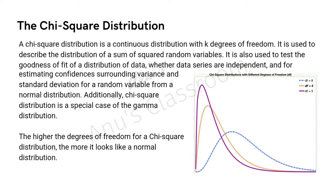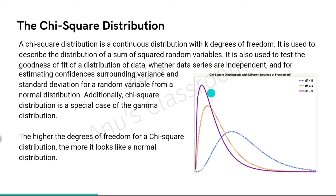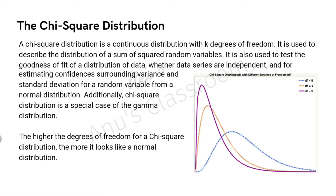The chi-squared distribution is also a special case of the gamma distribution. The higher the degrees of freedom of the chi-squared distribution, the more it looks like a normal distribution. As you can see in this example graph, with three degrees of freedom it doesn't look much like a normal distribution, but the blue line with eight degrees of freedom has started to look more like a normal distribution.